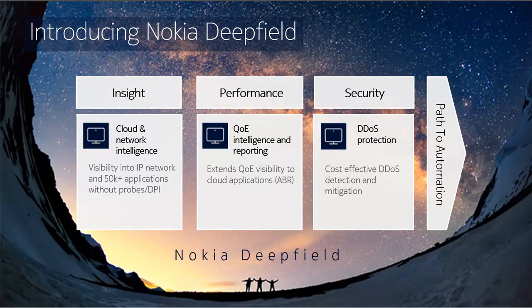The second use case is performance. DeepField analyzes over-the-top services for video, giving you an understanding of the average bitrate that users are seeing. It provides a network-wide average bitrate view, but also lets you drill down into a specific region, router, or interface to see the average bitrate for that service — a very useful view for understanding the performance you're delivering to customers.